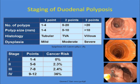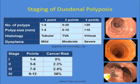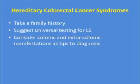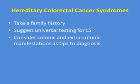Please keep the Spigelman stage of duodenal polyposis in mind — points are assigned to number, size, histology, and degree of dysplasia. The number of points directly correlates with ensuing cancer risk and determines the frequency of EGD surveillance. In summary: hereditary colorectal cancer syndromes are not uncommon; take a family history, suggest universal Lynch syndrome testing with your pathologist, and consider both colonic and extracolonic manifestations as clues to the diagnosis.